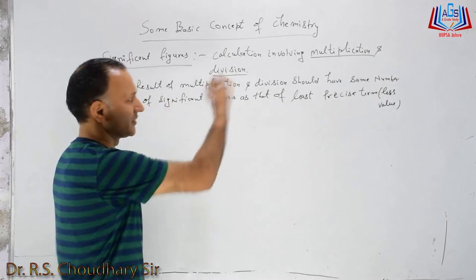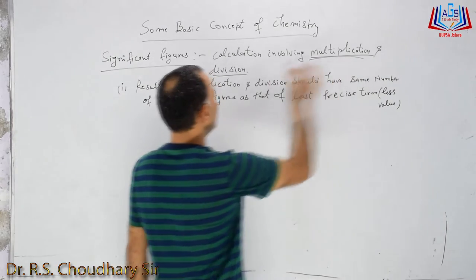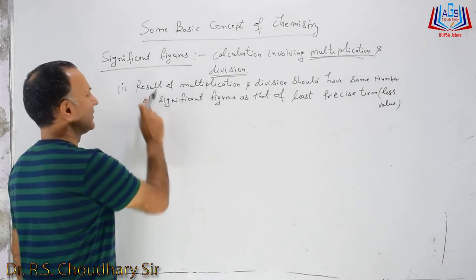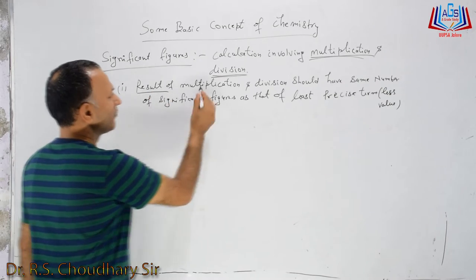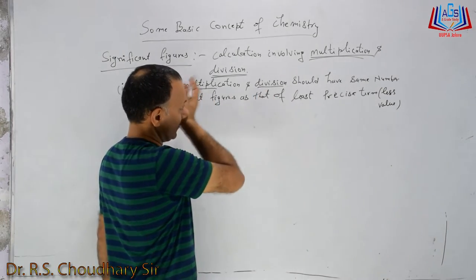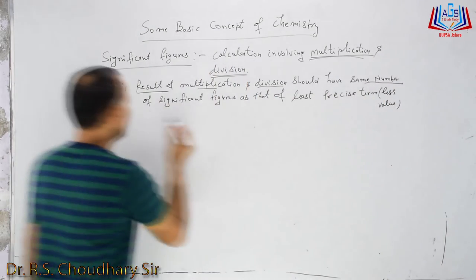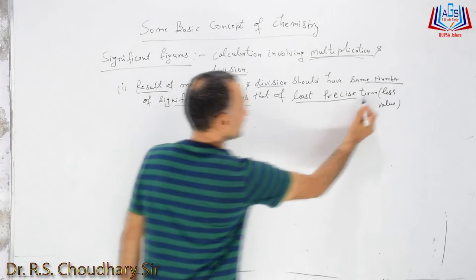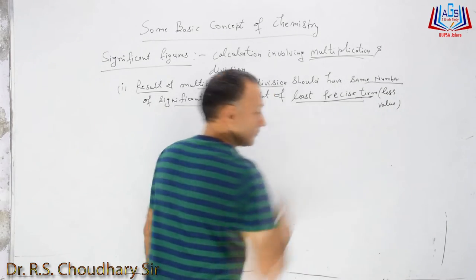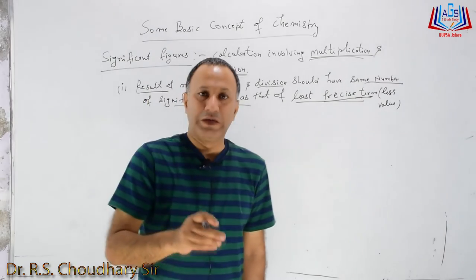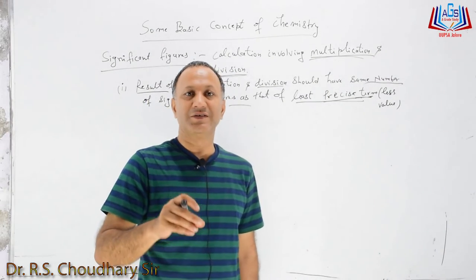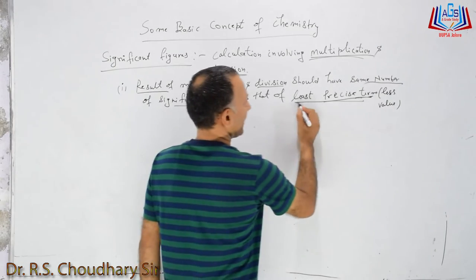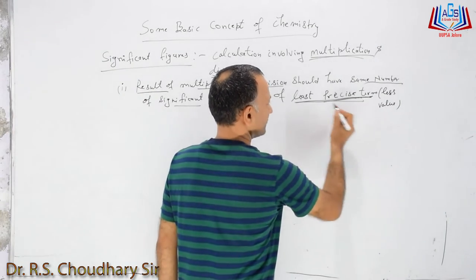We obey a certain rule when there is multiplication and division. You have to remember that the result of multiplication and division should have the same number of significant figures as that of the least precise term. The final result must contain the same number of significant figures as the least precise term.